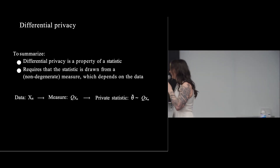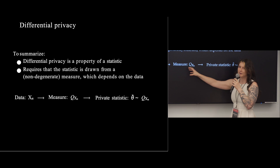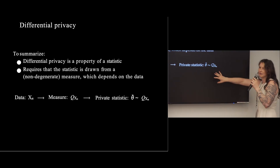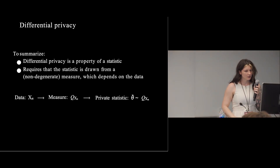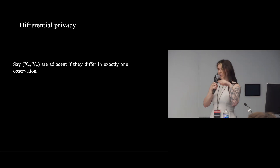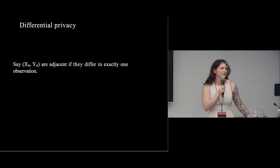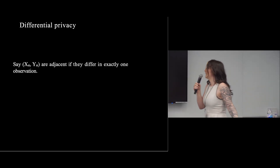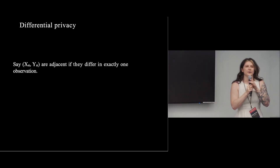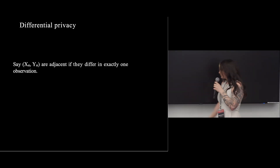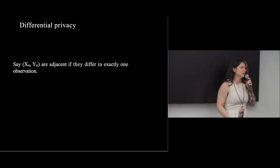To be concrete: you get your data, construct a probability measure that is a function of that data, and your statistic — in this case the median — is one draw from that measure. To define differential privacy we need the concept of adjacent databases: two databases X_n and Y_n are adjacent if they differ in exactly one observation, i.e., you take one row and replace it with a different row.